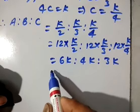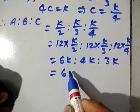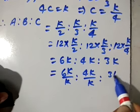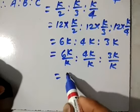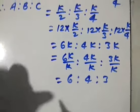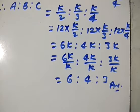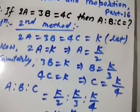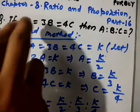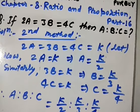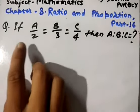Now dividing each term by k, we get 6k/k is to 4k/k is to 3k/k, which equals 6 is to 4 is to 3. This is the final value of a is to b is to c, given the condition 2a = 3b = 4c.